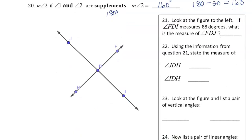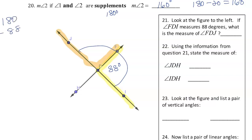Look at the figure — if angle FDI measures 88 degrees, what is the measure of angle FDJ? FDJ is over here on the other side. Those two angles are on a straight line, so I take 180 degrees and subtract 88 degrees, and that's going to be 92 degrees. So the measure of FDJ has to be 92 degrees.